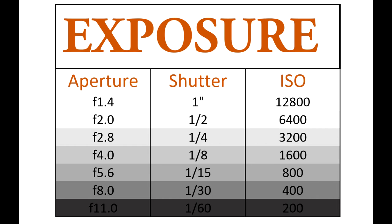With shutter speed, the faster the shutter goes, the darker the image gets. A half a second is a bigger number than a quarter of a second. As we speed up our shutter — making the fraction of a second smaller — the camera takes the photo more quickly, which darkens down the image. And as we slow the shutter speed towards one second, we brighten our image.